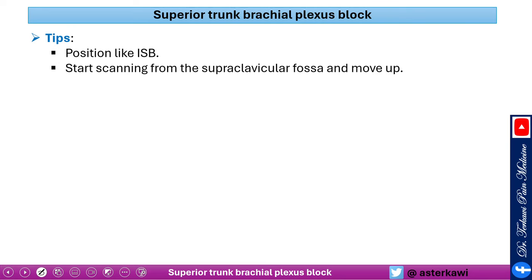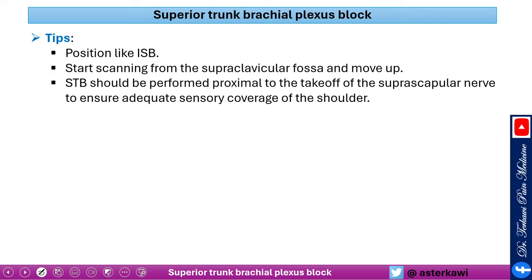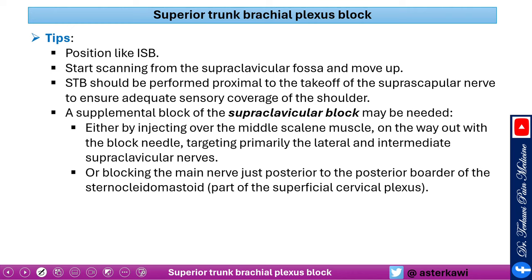The block should be performed proximal to the takeoff of the suprascapular nerve. You also need to supplement with a supraclavicular nerve block, since it provides continuous innervation to the shoulder area shown earlier. You can do this in two ways: the easiest is to inject over the middle scalene muscle on your way out, which mainly blocks the intermediate supraclavicular nerve. Alternatively, back up slightly, go to a higher level, and inject posterior to the border of the sternocleidomastoid to get more branches.